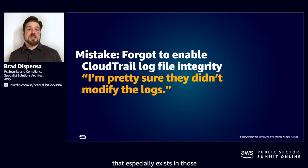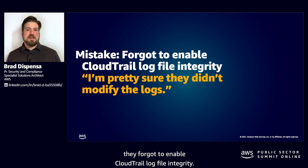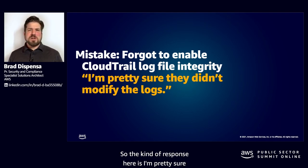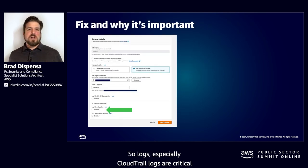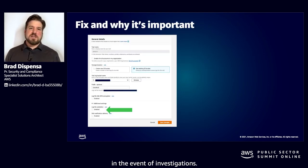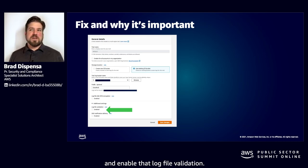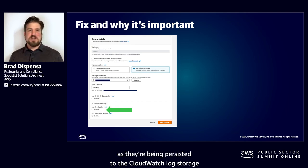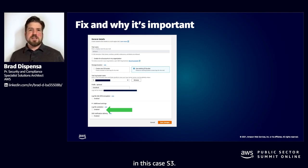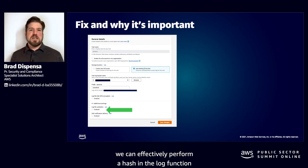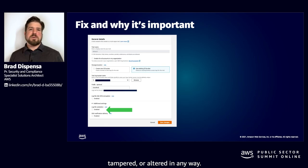The next mistake — especially in regulated environments — is forgetting to enable CloudTrail log file integrity. The common response is: I'm pretty sure they didn't modify the log files. CloudTrail logs are critical in the event of investigations, so we want high confidence in their integrity. On screen you can see where to enable log file validation. Behind the scenes, this creates a fingerprint of the files as they're persisted to S3, so when you want to validate the logs you can perform a hash to make sure the log files have not been modified, tampered, or altered in any way.